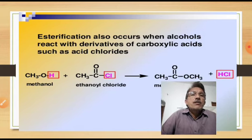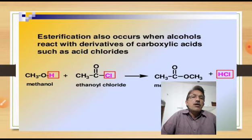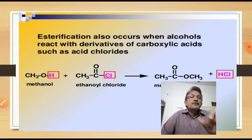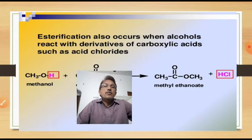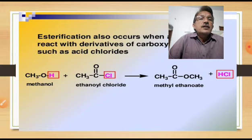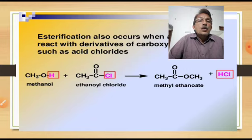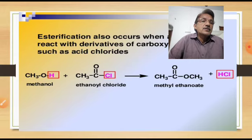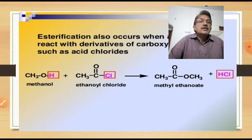Esterification also occurs when alcohols react with derivatives of carboxylic acids such as acid chlorides. When an alcohol is treated with an acid chloride, an ester is formed. For example, methanol reacts with ethanoyl chloride (acetyl chloride) to give methyl ethanoate. So esterification is possible with both carboxylic acids and acid chlorides.